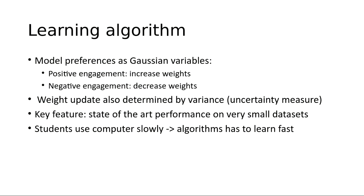In a nutshell, we are learning preferences for materials, modeled as preferences for material attributes. We model interactions as either successful — the material is accessible — or unsuccessful. This sounds similar to logistic regression, but the difference is that we are not modeling preferences as scalar values. We're modeling them as Gaussian variables, as random variables drawn from a Gaussian distribution. Blind and partially blind students use computers very slowly, so we must be able to learn really fast and achieve good results on very small datasets — which we do, achieving state-of-the-art results by a significant margin.